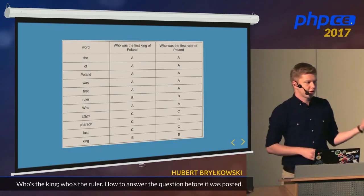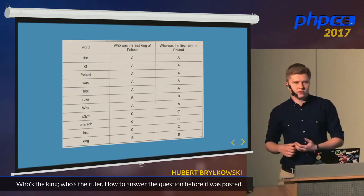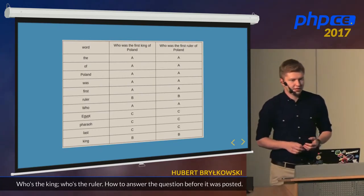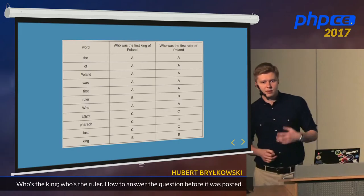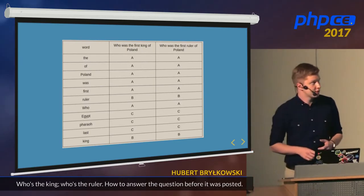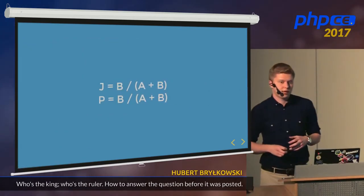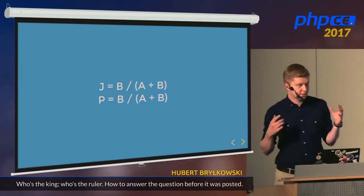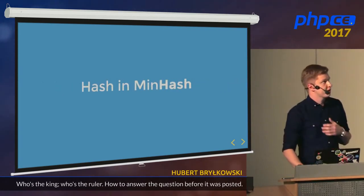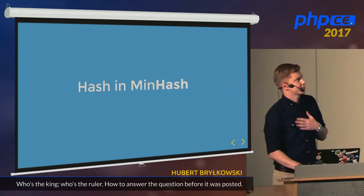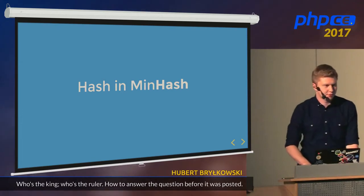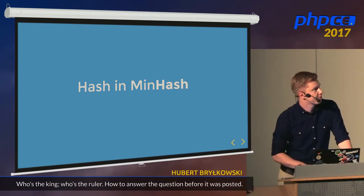And here comes another conclusion: the bigger the number of permutations, the more probable it is that the fingerprints will completely agree. I have a formula here, but there was a mistake — that was my error.